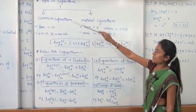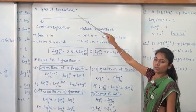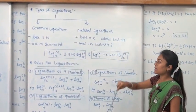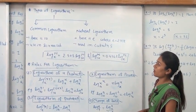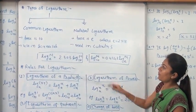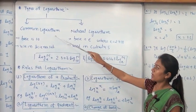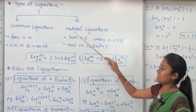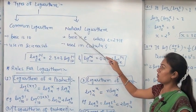We discuss the types of logarithm. There are two types of logarithm: first, common logarithm, and second, natural logarithm.